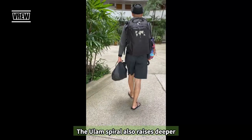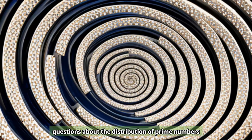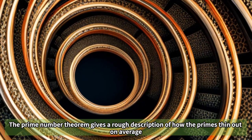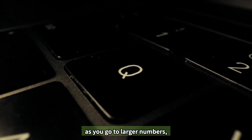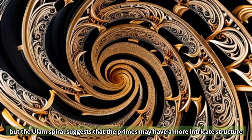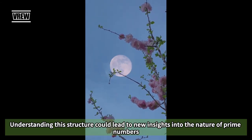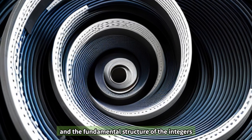The Ulam spiral also raises deeper questions about the distribution of prime numbers. The prime number theorem gives a rough description of how the primes thin out on average as you go to larger numbers. But the Ulam spiral suggests that the primes may have a more intricate structure. Understanding this structure could lead to new insights into the nature of prime numbers and the fundamental structure of the integers.